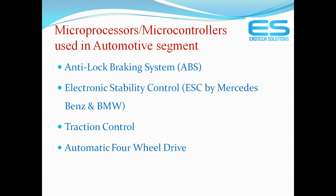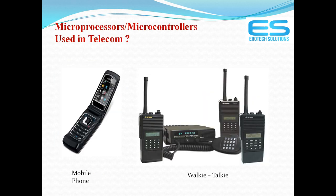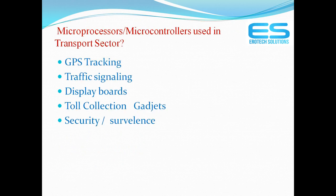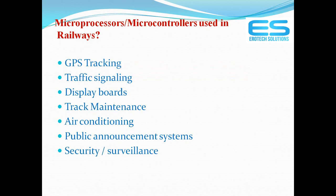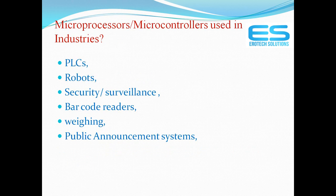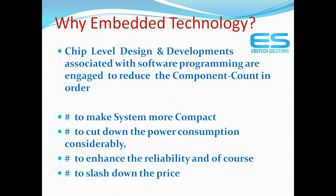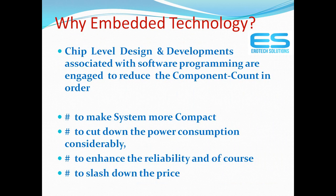Controllers and processors are used in many areas: consumer electronics, automotive, communication, medical, and office equipment. Examples include televisions, calculators, refrigerators, washing machines — many daily-life applications fall under embedded stream due to the hardware-software combination. More applications include locking systems, walkie-talkies in telecom, fax machines, networking devices like routers and switches, GPS tracking in transport, RFID, point-of-sale barcode readers in retail, and defense applications.